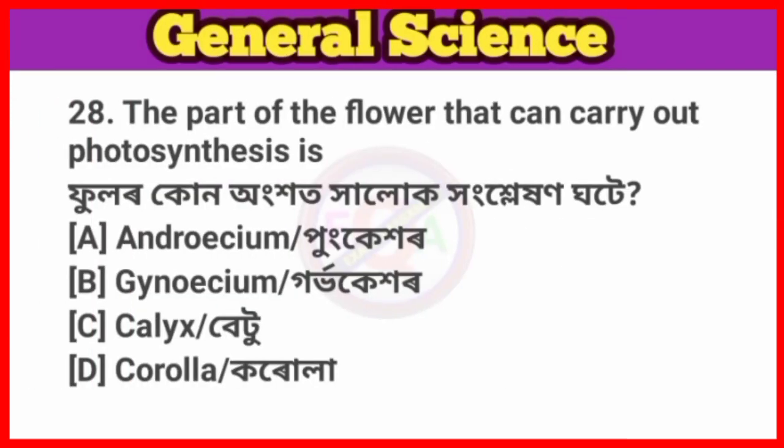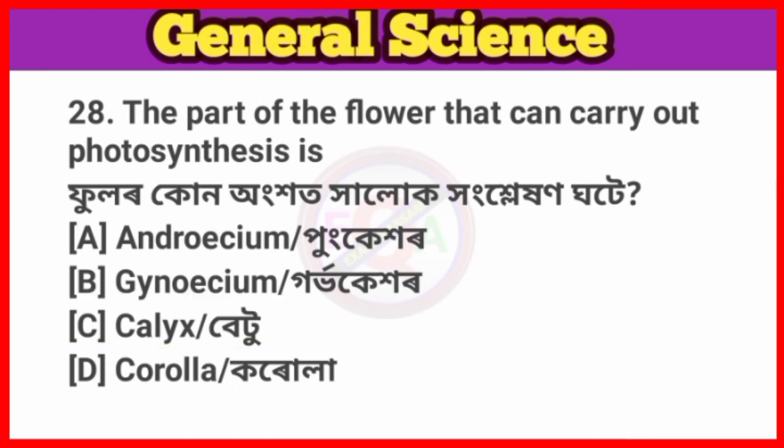Question No. 28. The part of the flower that can carry out photosynthesis is? Answer: Option C, Green leaves (sepals). Photosynthesis occurs in the green parts because they contain chlorophyll.